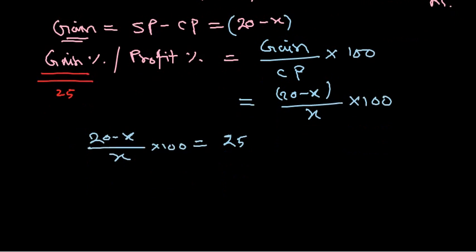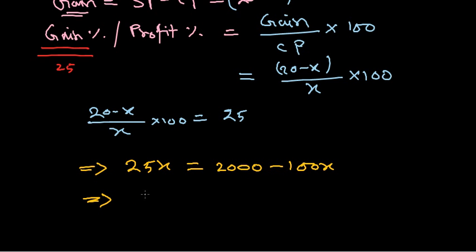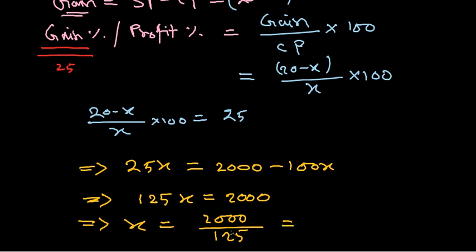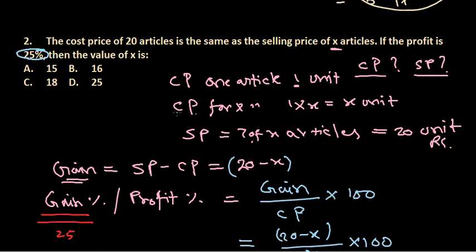Cross-multiplying: 25X = 100 × (20 − X), which gives 25X = 2000 − 100X. Transferring terms: 125X = 2000, so X = 2000 / 125. Simplifying by dividing by 25: X = 80 / 5 = 16. The answer is 16.